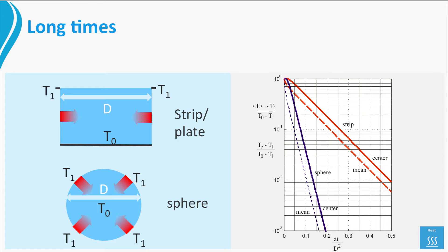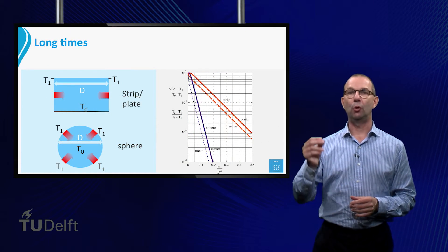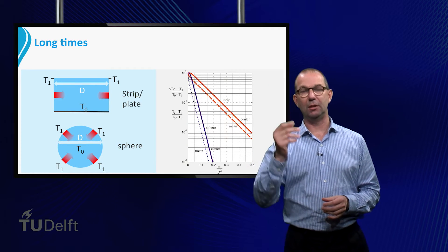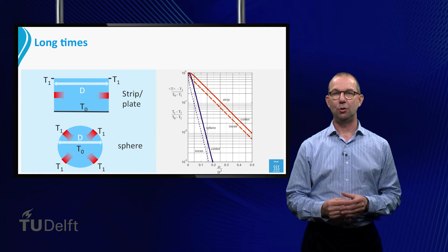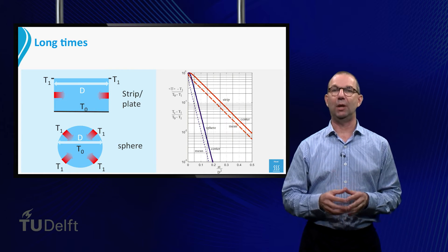The horizontal axis is time made dimensionless. It's actually the Fourier number, A times T divided by d squared. The vertical axis shows the mean or center temperature with respect to the wall temperature, made dimensionless by the original temperature difference T1 minus T0. Note that the vertical axis uses a logarithmic scale. This graph gives the solution for all times, but obviously for short times the precision of reading the graph is rather poor. You better do the short time analysis with the penetration theory to get accurate answers.